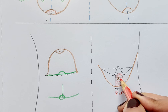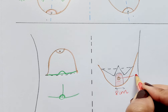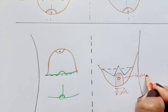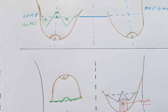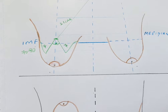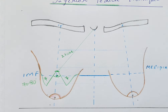Finally, the nipple areolar complex is marked at approximately four to four-and-a-half centimeters in diameter, using a standard cookie cutter. These are the complete standard markings for the wise pattern and inferior pedicle technique. The step-by-step surgical procedure will be explained in the next video.